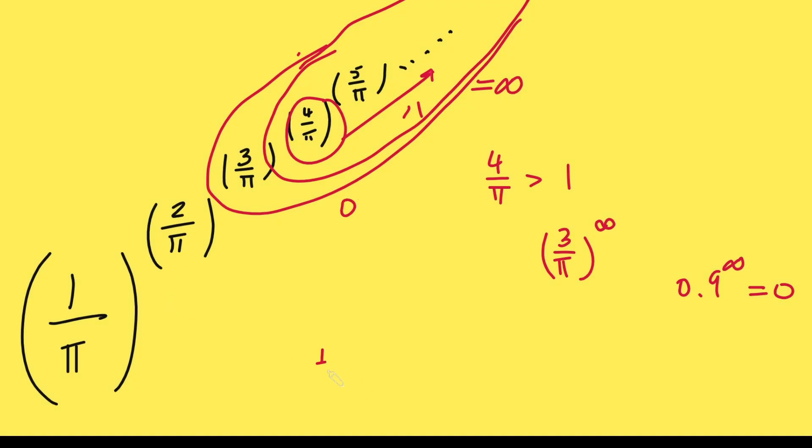So we're just considering 1 over pi to the 2 over pi to the 0. Well, anything to the 0 is just 1, so 2 over pi to the 0 is just 1. So this is just 1 over pi to the power of 1, which is just 1 over pi. And so that would be our answer. The answer to this problem is 1 over pi.